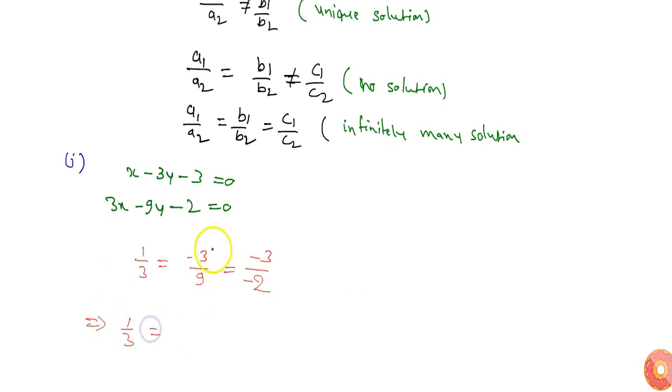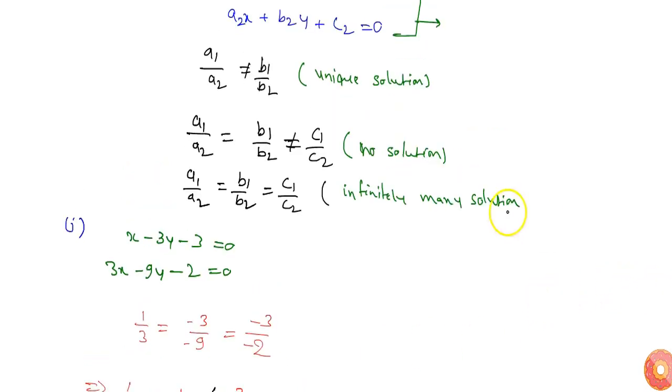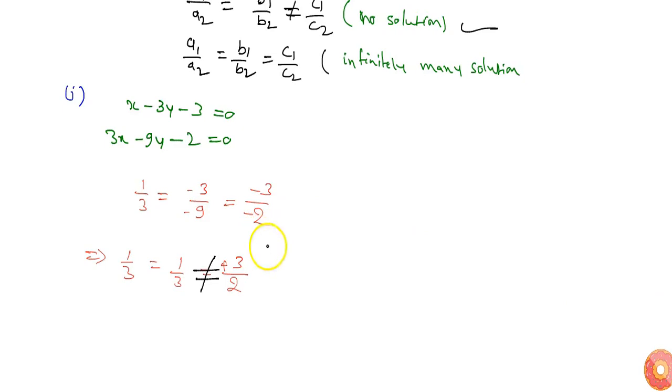So if I solve this, I'll get 1/3 equals -1/3... -3/-9 will be 1/3, equals to 3/2. So here I can see that a1/a2 equals b1/b2, and b1/b2 is not equal to c1/c2. That means it is the second case with no solution. So I can say that the pair has no solution.